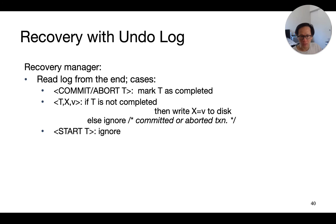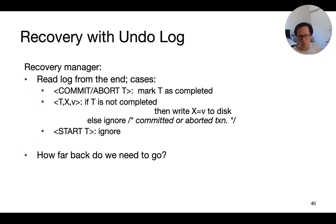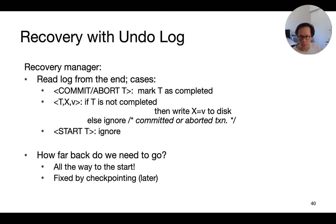First, if we see a commit or an abort record, we simply mark the transaction as completed and don't need to deal with it anymore. Second, if we see an update record for a transaction that has not been completed, we write back the original value to the disk. Finally, we ignore all start transaction records. We need to go all the way to the beginning of the log to identify all incomplete transactions, but we will fix this later with checkpointing.